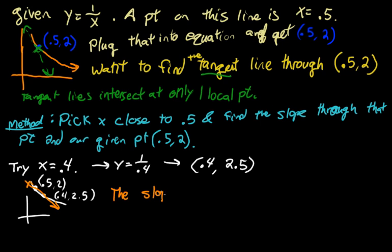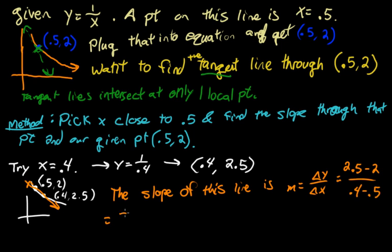The slope of this line, the one in orange, is m equals delta y over delta x. Delta is a Greek letter. It's drawn as a triangle, and it means the change in something. So the change in y divided by the change in x. Mathematically, this is 2.5 minus 2 divided by 0.4 minus 0.5, which equals negative 5.